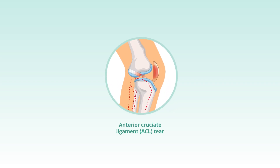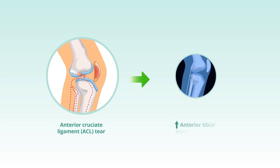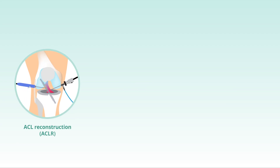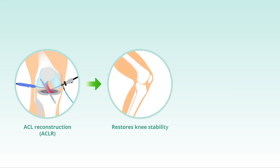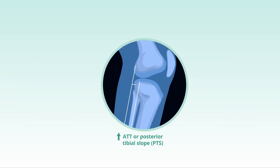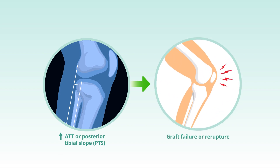Anterior cruciate ligament or ACL tears are known to disrupt knee stability as a result of an increase in anterior tibial translation or ATT. ACL reconstruction or ACLR helps restore knee stability, thereby reducing the risk of osteoarthritis. However, increased ATT and posterior tibial slope or PTS can exert stress on the reconstructed ACL, resulting in graft failure or re-rupture.